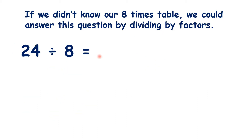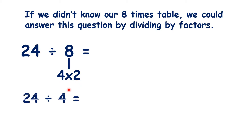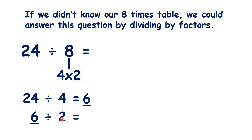Let's try another one. If we didn't know our 8 times table, but did know that 4 times 2 is 8, we could answer this question. First, we could divide 24 by 4 — the first of our factors — to get 6. Then we could divide by 2, the second of our factors, to get 3. So 24 divided by 8 is 3.